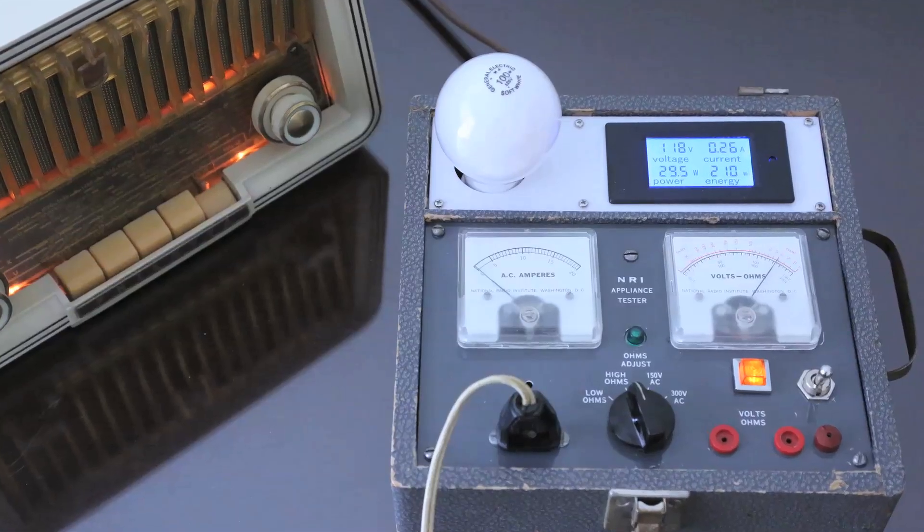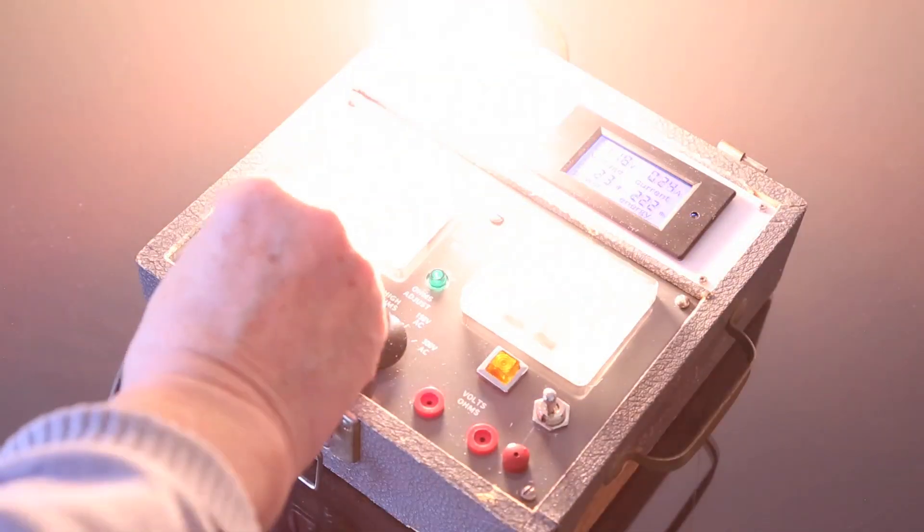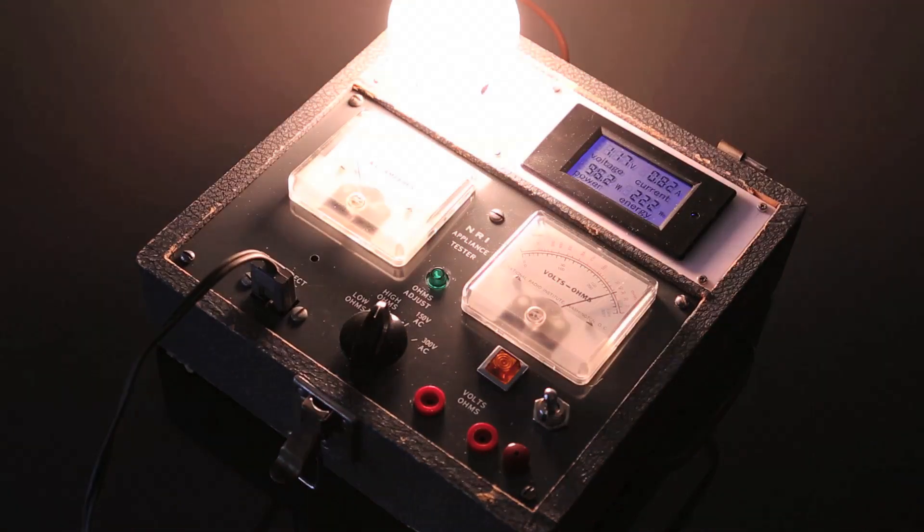If your radio has a short circuit, the Dim Bulb Tester will simply light up the bulb instead of damaging the radio.